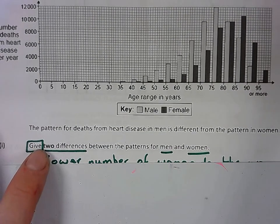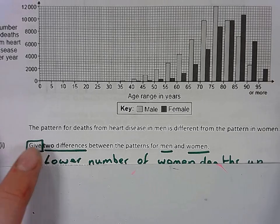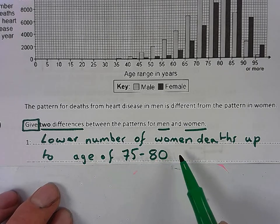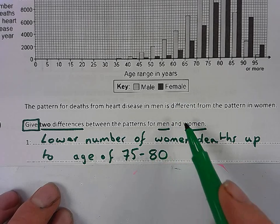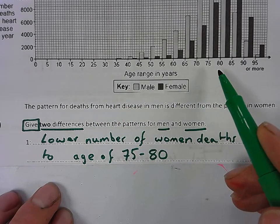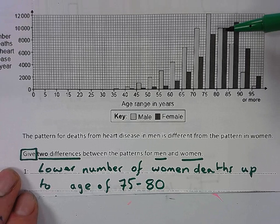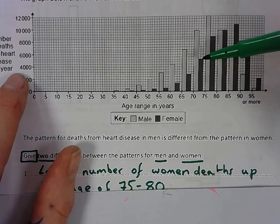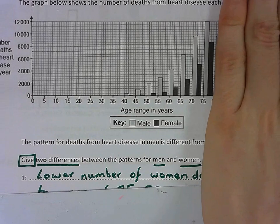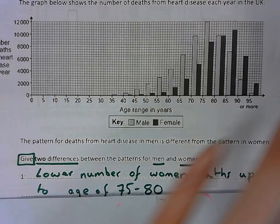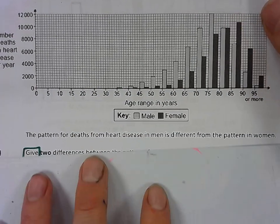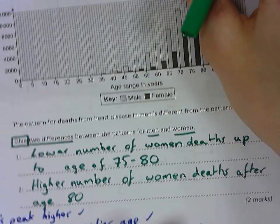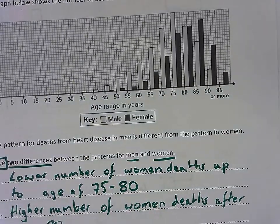Give two differences between the patterns for men and women. The first thing you could write is that fewer women die per year up to around ages 75 to 80 — all the way up to that point, the male statistic is always higher than the female. So the number of deaths per year for males, all the way up to age 80, is higher for men. The second thing you could say is that after age 80, it's then higher for women — the dark grey is higher than the light grey after age 80.